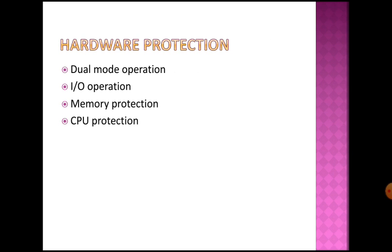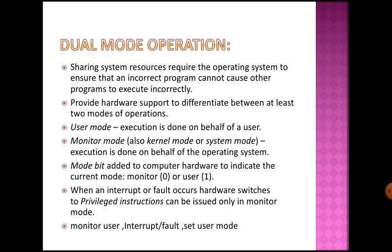The categories of hardware protection that we will discuss in detail are: dual mode operation, input-output protection, memory protection, and CPU protection. So we have to talk about dual mode operation — what is happening, as the name implies.